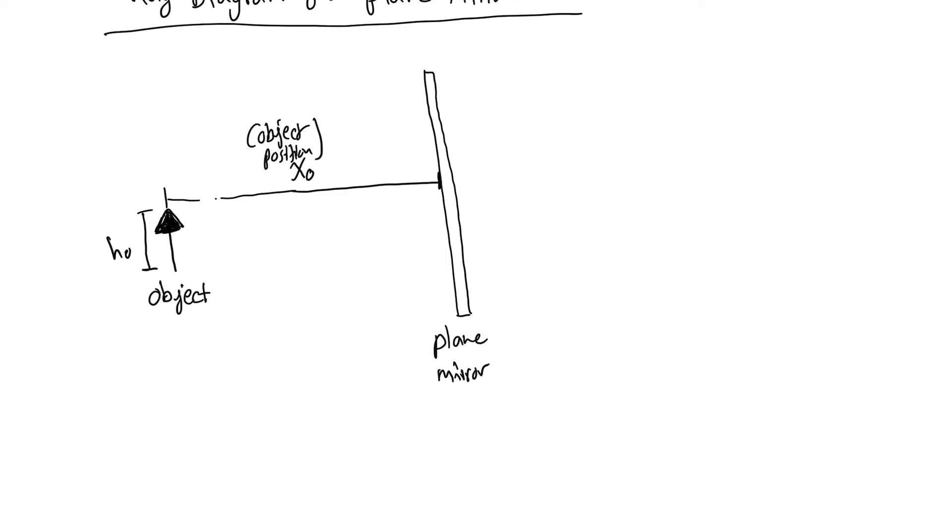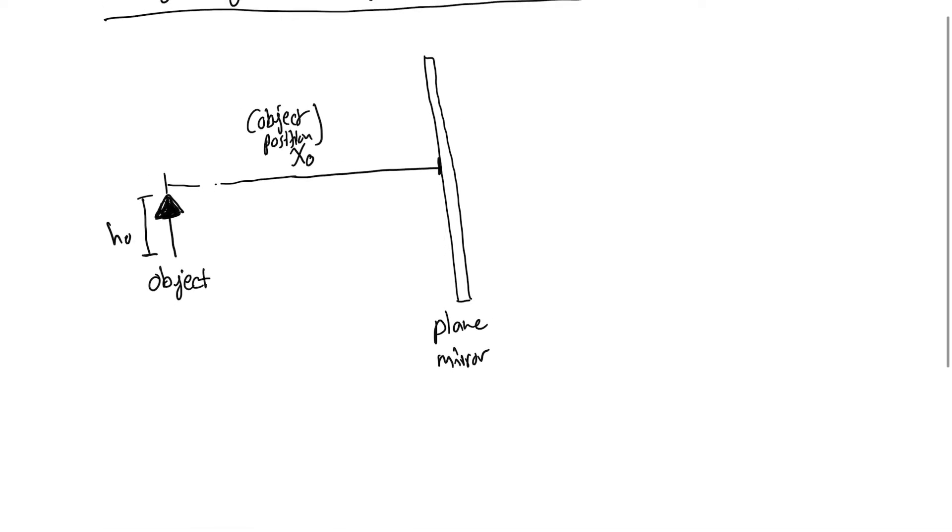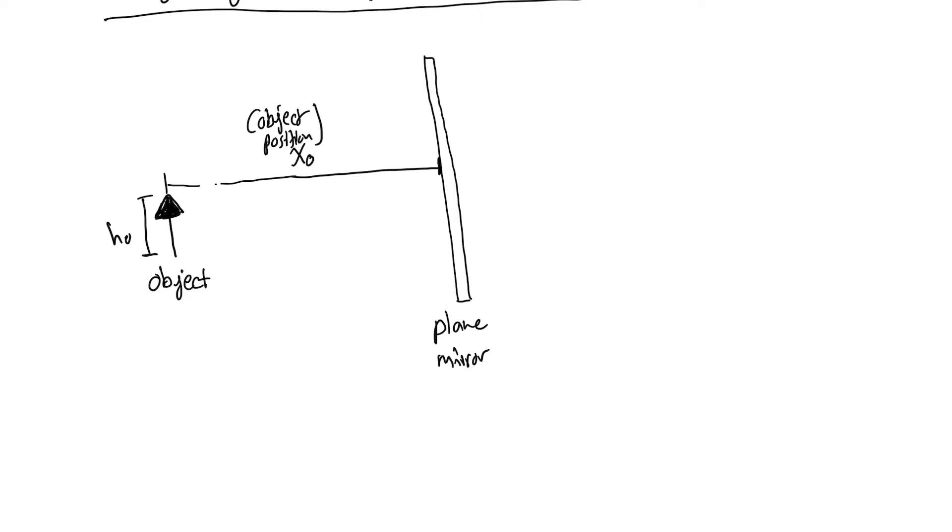We're going to construct the image of this object using the ray diagram in front of a plane mirror. The first thing we need to keep in mind is whenever we are drawing the image for the object, it's important to keep a couple things in mind. In a plane mirror, as light hits the mirror at 90 degrees, let's say I take ray number one which is going straight forward towards the mirror. This ray is going to be bouncing back along the line it came from because it's hitting the mirror at a 90 degree angle.